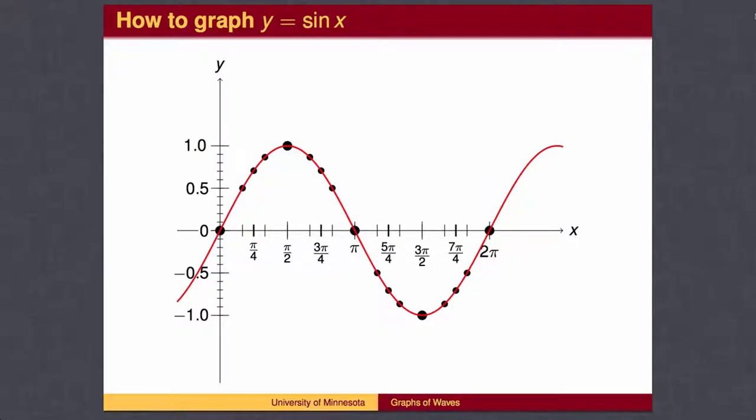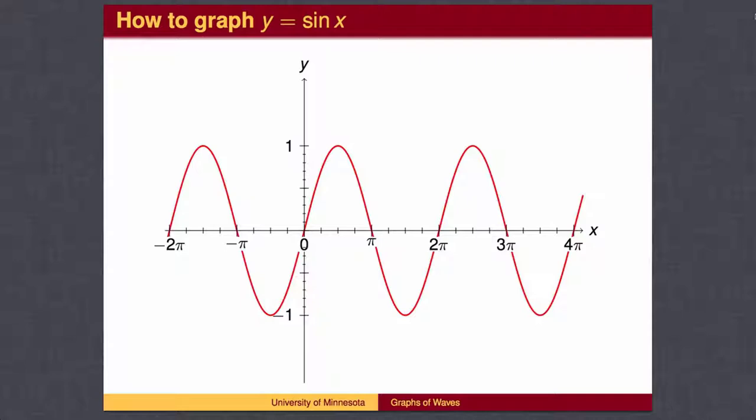We can then cut π/2 in half to get π/4: 2π/4 which is π/2, 3π/4, 4π/4 which is π, 5π/4, 6π/4 which is 3π/2, 7π/4, and finally 8π/4 which is 2π. We can then expand the graph by realizing that the graph will repeat every 2π.